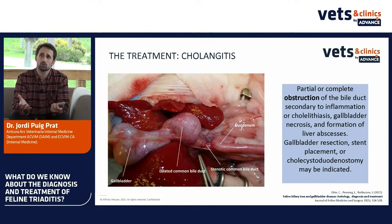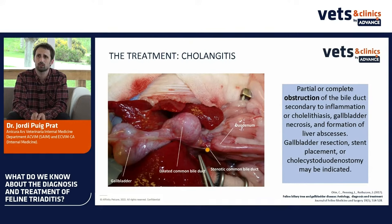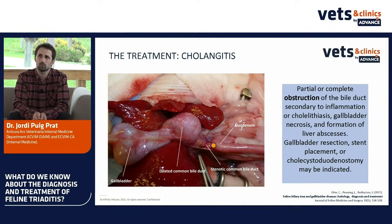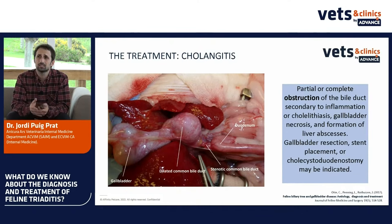Sometimes we have partial or complete obstruction of the bile duct — for example a stenotic common bile duct with the gallbladder and dilated common bile duct visible on imaging, with stenosis at the level of the duodenum. Those cats may need gallbladder resection or stent placement. In one case where stent placement was not possible, the surgeon performed a cholecystoduodenostomy.